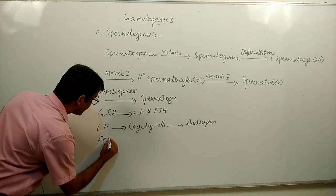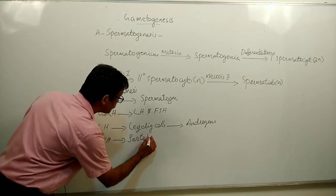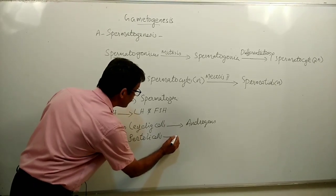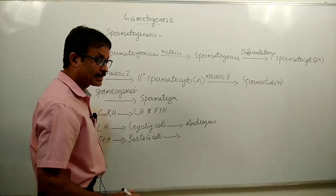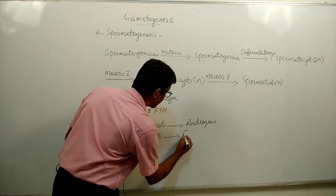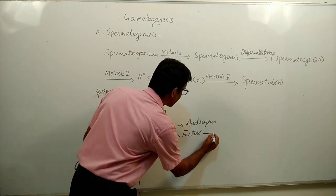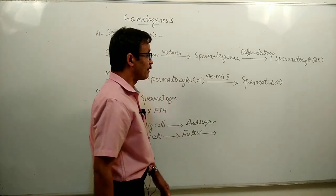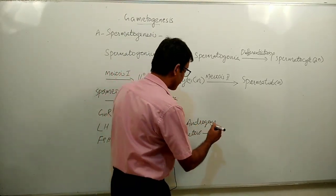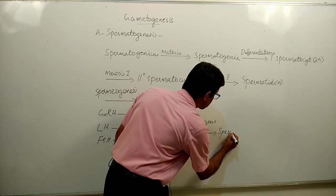FSH influences Sertoli cells, and the Sertoli cells then secrete many factors. These factors influence the transformation of spermatids into active sperms or spermatozoa — that is, spermiogenesis.